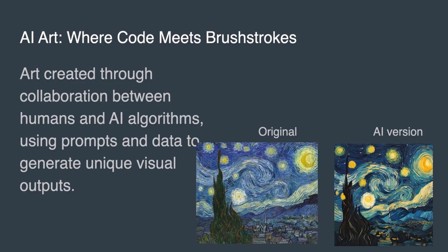AI isn't about robots replacing artists — it's about a powerful partnership. We, the humans, provide the vision, the prompts, the guiding hand, and the AI, our digital collaborator, translates those sparks of imagination into dazzling visual realities. Through algorithms and vast data sets, brush strokes become lines of code, weaving together colors, textures, and emotions to create artworks that were once mere whispers of the human mind.